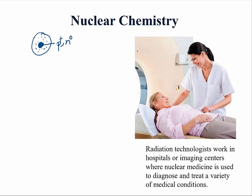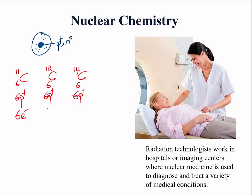Let us take a look at three isotopes of carbon: carbon-11, carbon-12, and carbon-14. Each of these isotopes would have six protons — six protons for carbon-12 and six protons for carbon-14. They are all neutral, so each of them will have six electrons. Carbon-11 will have five neutrons, carbon-12 will have six neutrons, and carbon-14 will have eight neutrons.